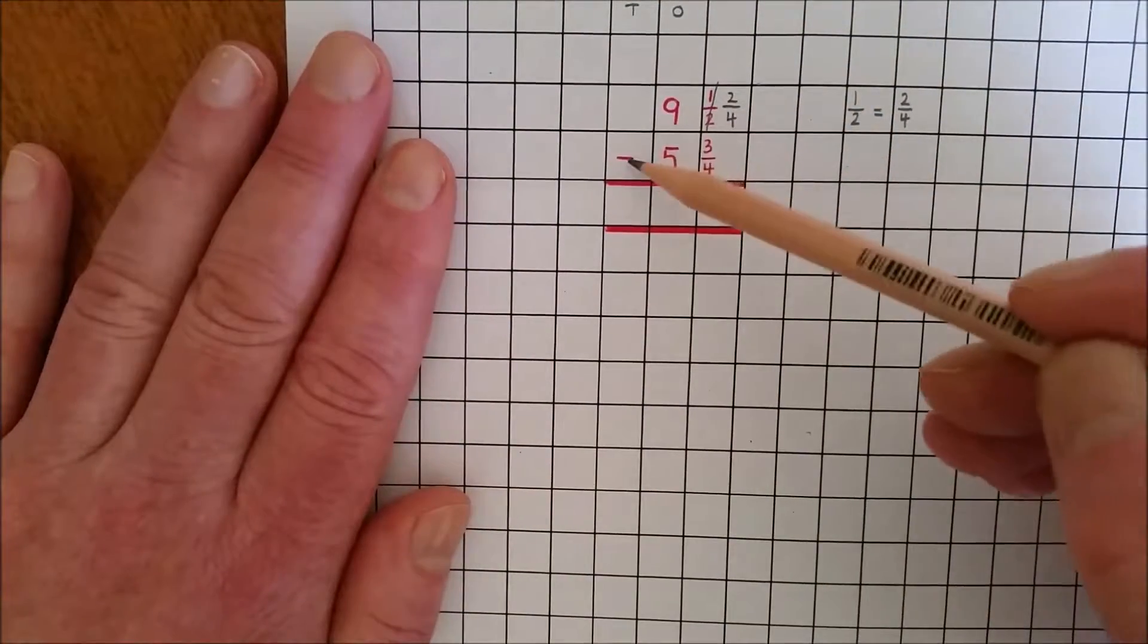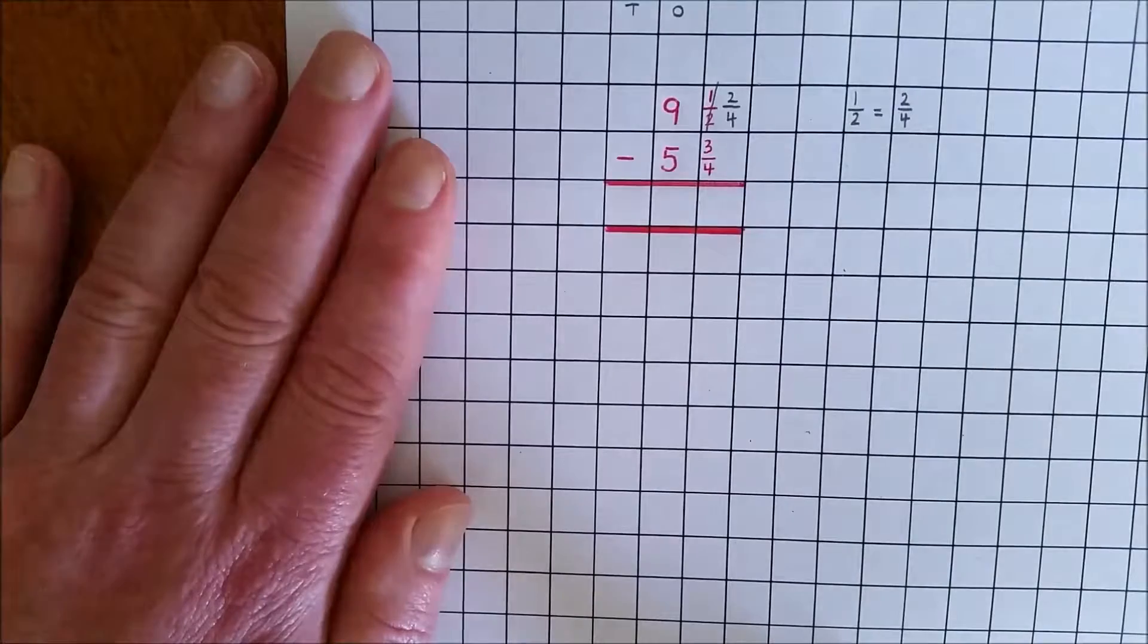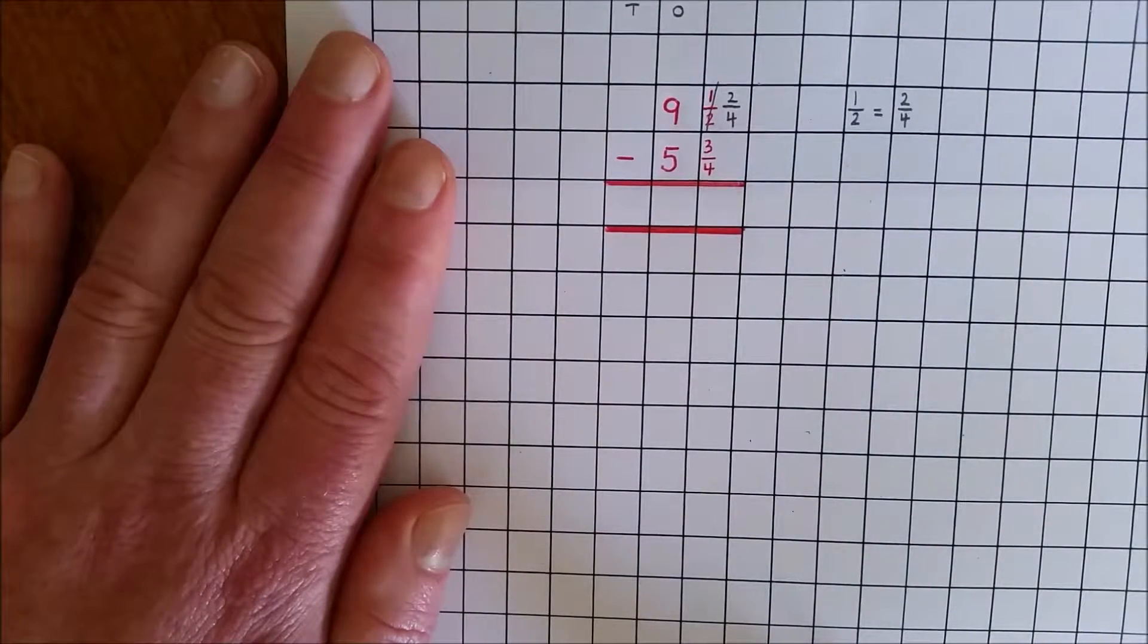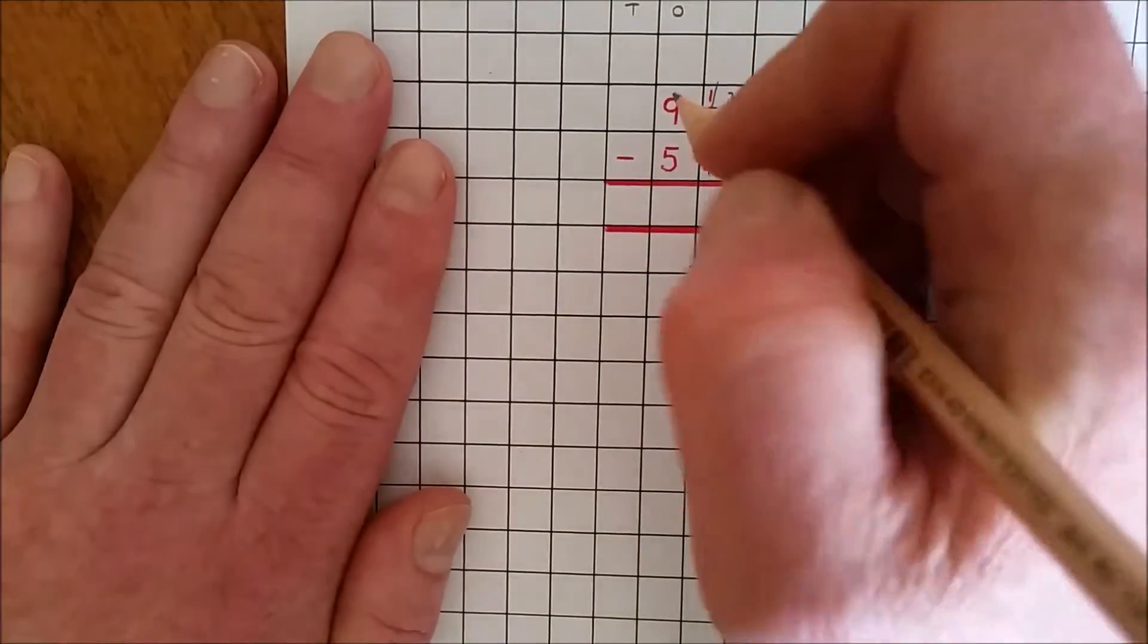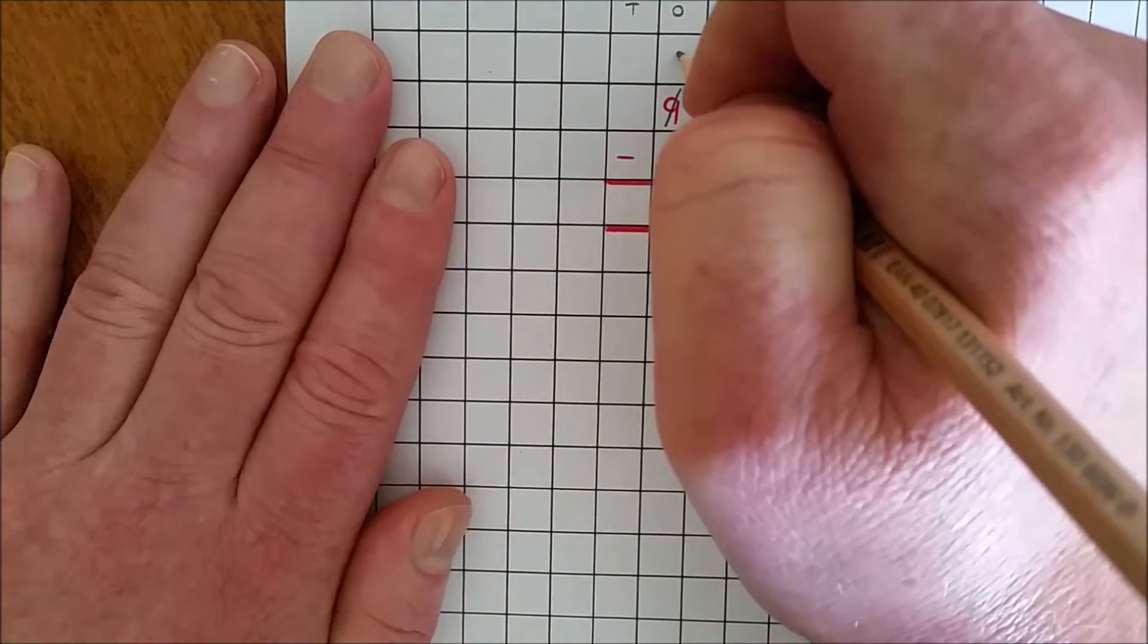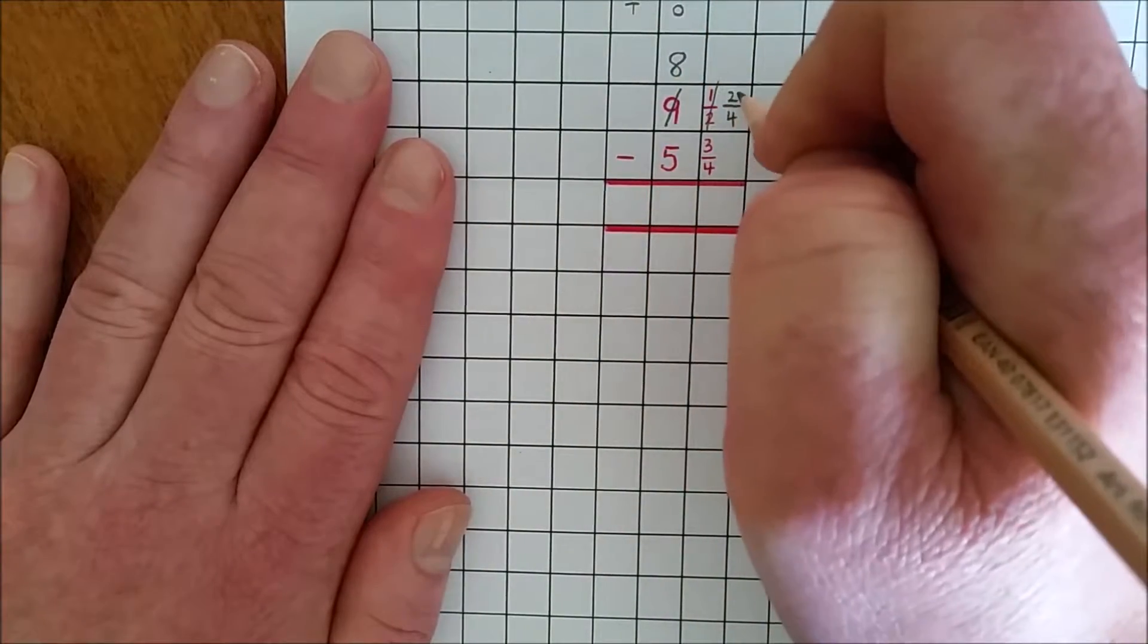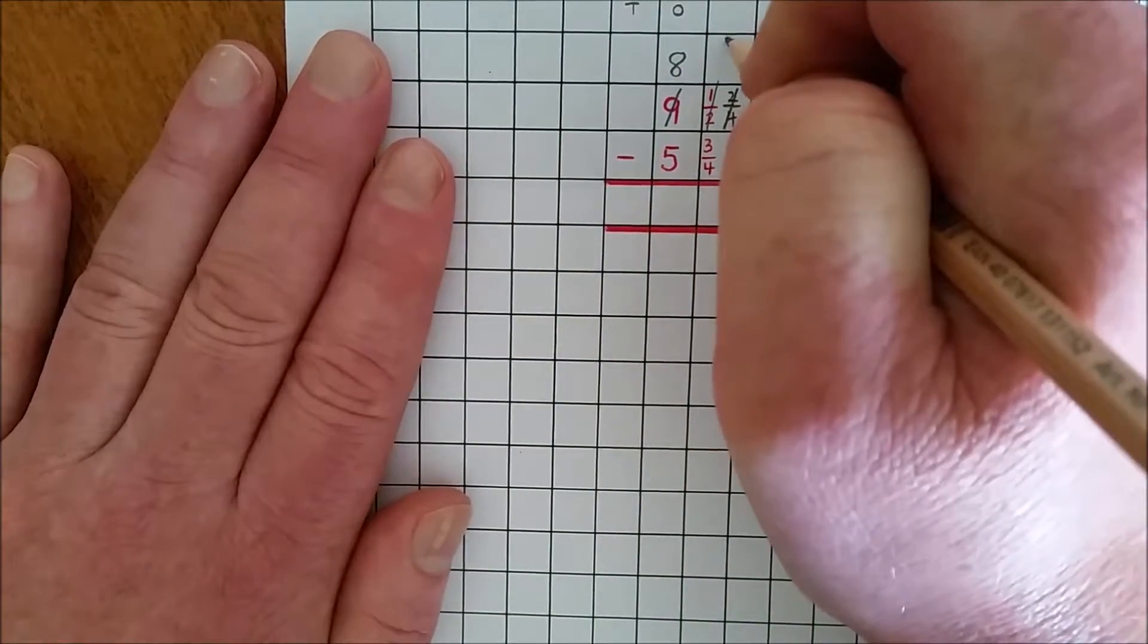2 quarters, can you take away 3 quarters? No, there are not enough quarters so you need to rename. Rename 9 ones and 2 quarters as 8 ones and 6 quarters.